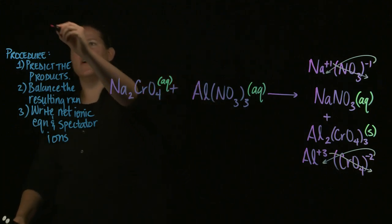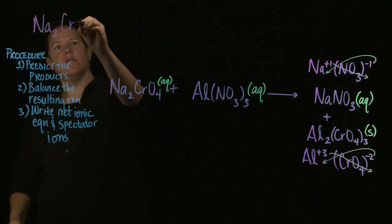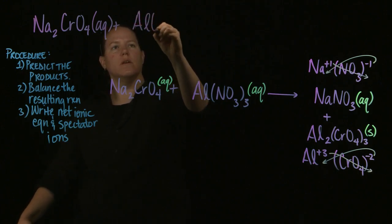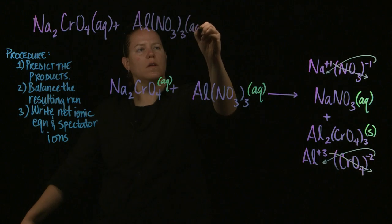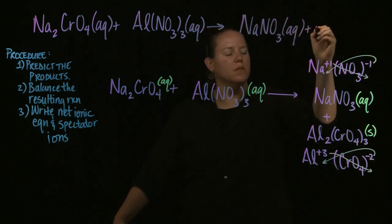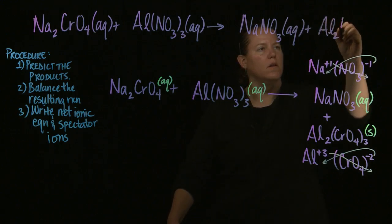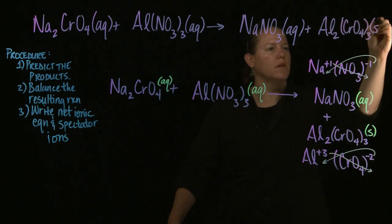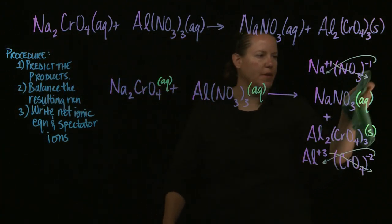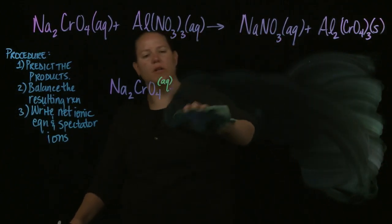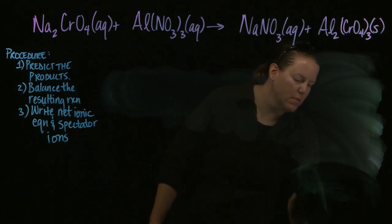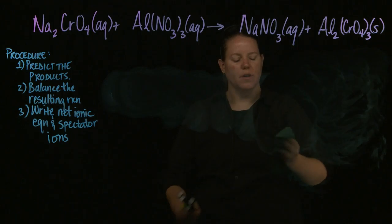Now let's do the balancing. I'm making sure I have the same number of atoms of each element on either side of the arrow. Remember, you never start with an element that exists in more than one place on one side. You can balance according to the polyatomic ion if it's exactly the same on both sides. The coefficient times the subscript tells you how many of that element are present. You cannot change subscripts — those were determined by crossing the ions and represent the actual formula.